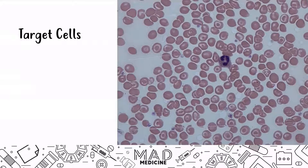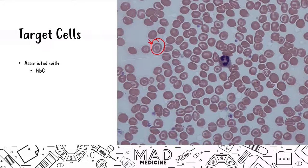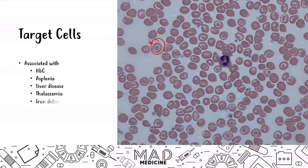Target cells are exactly what the name says — they have a target appearance. Target cells are associated with hemoglobin C disease, asplenia, liver disease, thalassemias, iron deficiency anemia, and sickle cell disease.